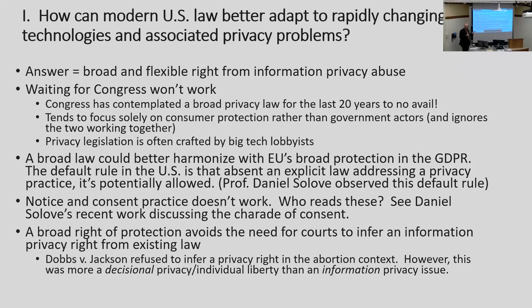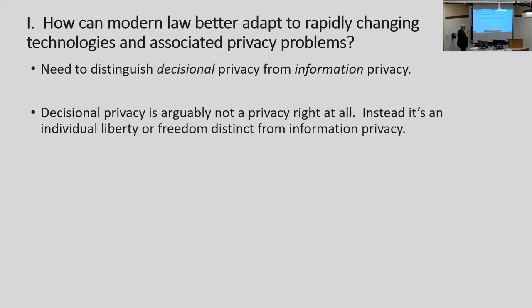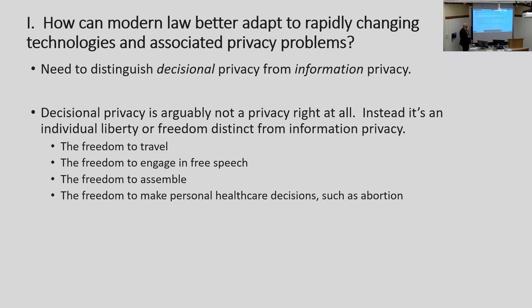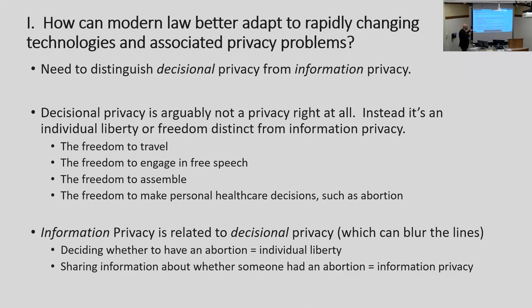How do we distinguish decisional privacy from information privacy? One idea is that decisional privacy is arguably not a privacy right at all — instead, individual liberty or freedom, distinct from information privacy. We think about decisional rights: right to travel, right to free speech, right to assemble, make personal healthcare decisions. But what blurs the lines is that information privacy is related to decisional privacy. Deciding whether to have an abortion is an individual decisional freedom, but sharing information about whether somebody had an abortion — that's information privacy. It's a private issue.